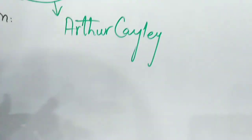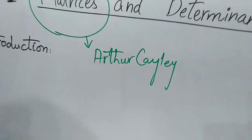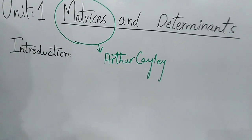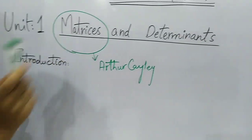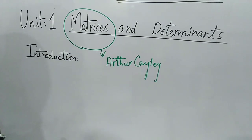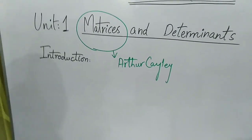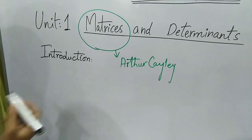The idea of matrices was given by Arthur Cayley in 1858, an English mathematician who developed the theory of matrices. Now I will tell you what a matrix is.